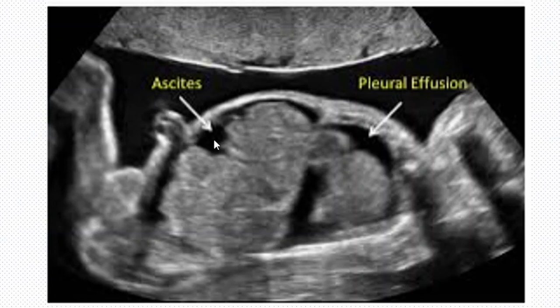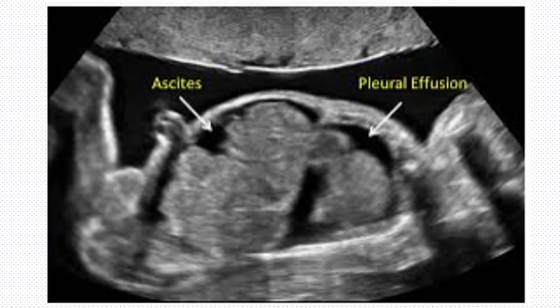This is not the only pocket that has got free fluid. Going up, that's our diaphragm separating the thorax and the abdominal cavity. You can see that in this space there is also anechoic free fluid in the lungs — the fluid found in the thoracic region is called pleural effusion. A combination of free fluid accumulation in more than one pocket is what is referred to as hydrops fetalis, or fetal hydrops.